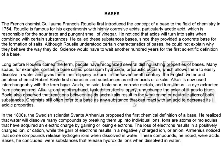In the 1800s, the Swedish scientist Svante Arrhenius proposed the first chemical definition of a base. He realized that water will dissolve many compounds by breaking them up into individual ions. Ions are atoms or molecules that have acquired an electric charge by gaining or losing electrons. The loss of electrons results in a positively charged ion, or cation, while the gain of electrons results in a negatively charged ion, or anion. Arrhenius noticed that some compounds release hydrogen ions when dissolved in water — these compounds, he noted, were acids. Bases, he concluded, were substances that release hydroxide ions when dissolved in water.